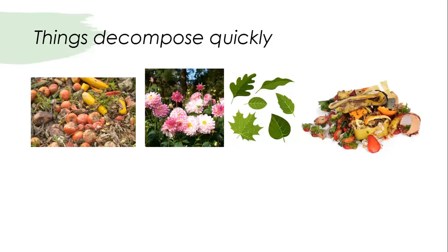These are examples of things that decompose quickly. Fruits and vegetables decompose quickly, and so do flowers, leaves, and kitchen waste. You can see banana peels, orange peels, egg shells, and other organic waste — they all decompose quickly.